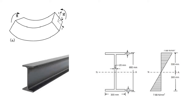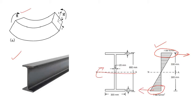Let's recap some basic concepts. Consider a beam with an I-section or wide flange section subjected to a bending moment about its major axis. The stress distribution shows that the majority of stresses — both tensile and compressive — are carried by the flanges. So whenever bending moment is applied about the major axis of an I-section, it is carried by the flanges as a tensile force and a compressive force.